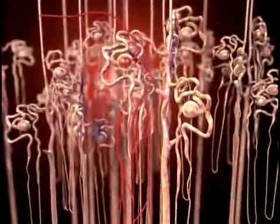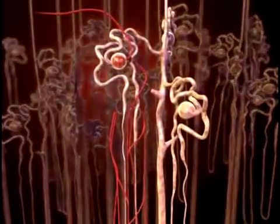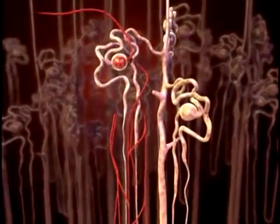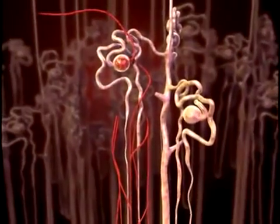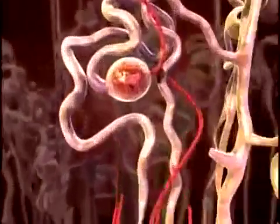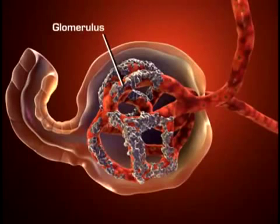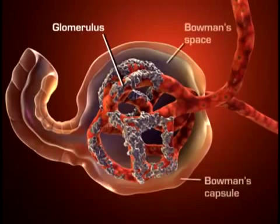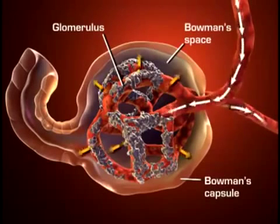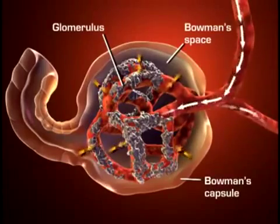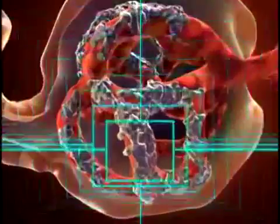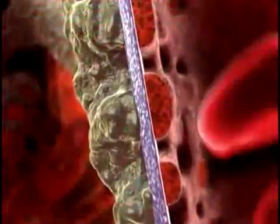The kidneys also selectively reabsorb those substances that are needed to maintain the normal composition of the blood. By adjusting blood composition, the kidneys are able to maintain blood volume and pressure, and ensure the proper balance of sodium, chloride, potassium, calcium, hydrogen, and phosphate.